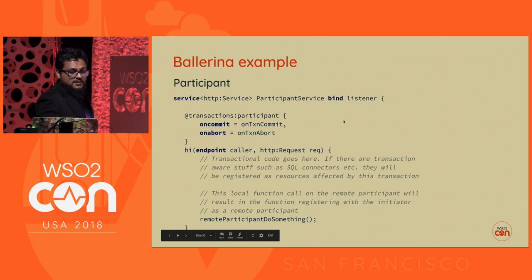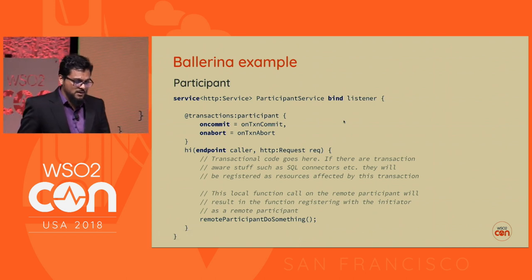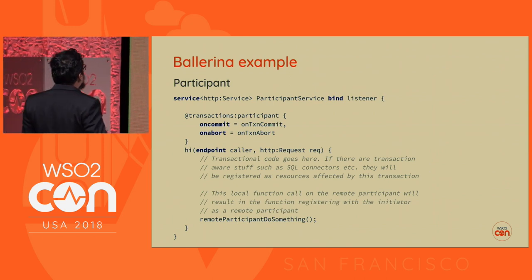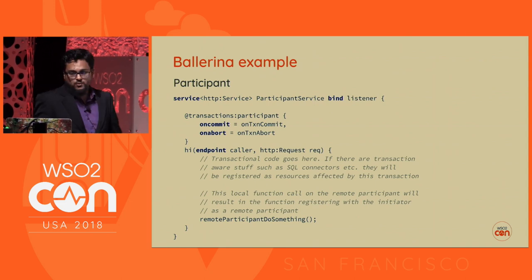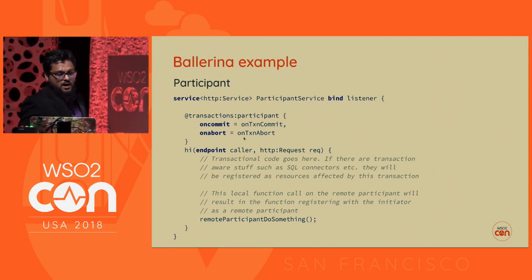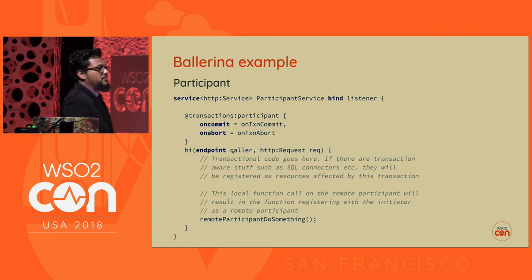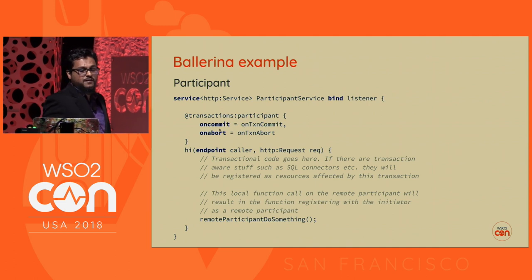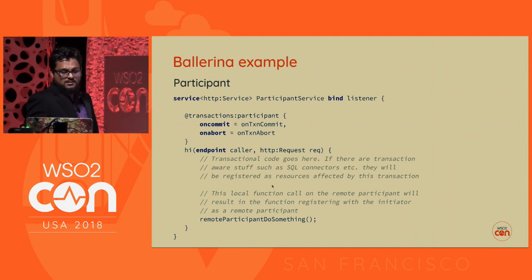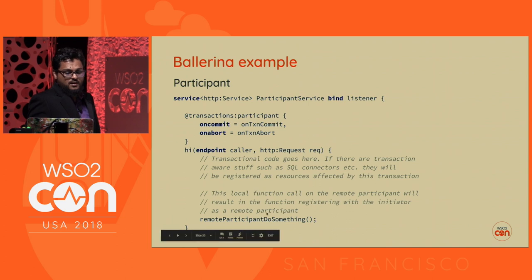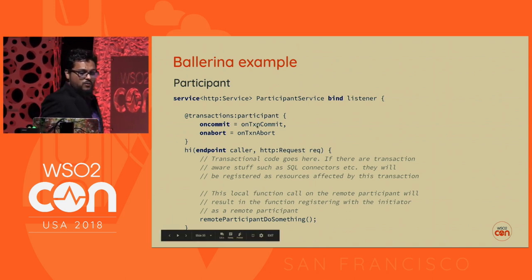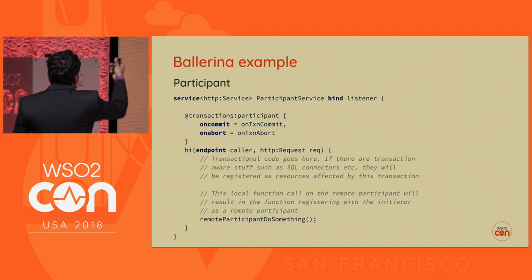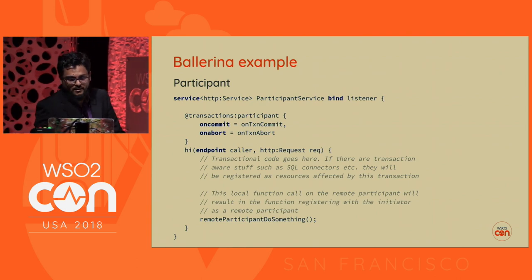On the participant side — this is a new improved syntax not yet released publicly — we simply mark an HTTP resource or service resource as a participant and provide callback functions. The business logic call comes in and we can do whatever we want. When the global transaction either commits or aborts, these callback functions get called. So we are just registering a couple of function pointers.